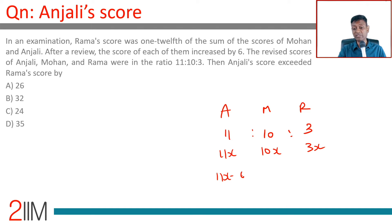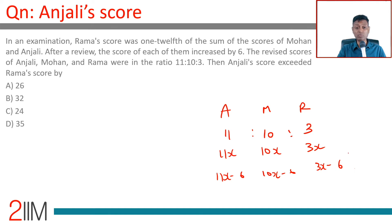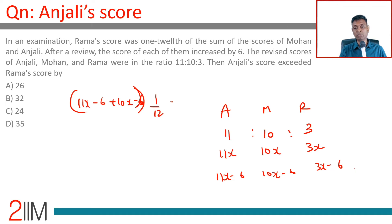...before the review, their scores could have been 11x−6, 10x−6, and 3x−6. Now Rama's score was the sum of Mohan and Anjali's scores, so: (11x−6) + (10x−6) = 3x−6 multiplied by 12.